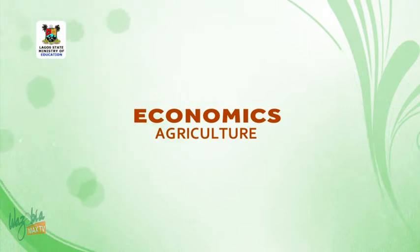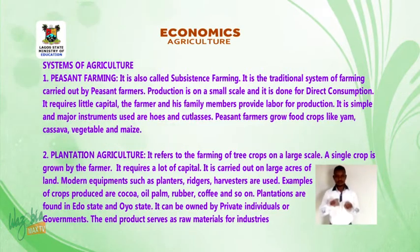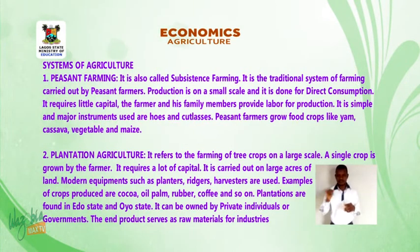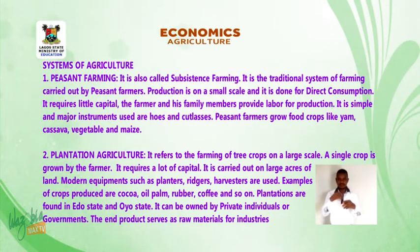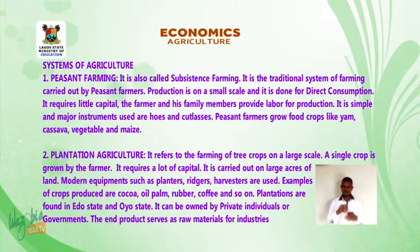Let us consider the systems of agriculture practiced in Nigeria. 1. Peasant farming, also called subsistence farming, is the traditional system of farming carried out by peasant farmers. Production is on a small scale and is done for direct consumption. It requires little capital. The farmer and his family members provide labor for production. It is simple, and the major instruments used are hoes and cutlasses. Peasant farmers grow food crops like yam, cassava, vegetables, and maize.